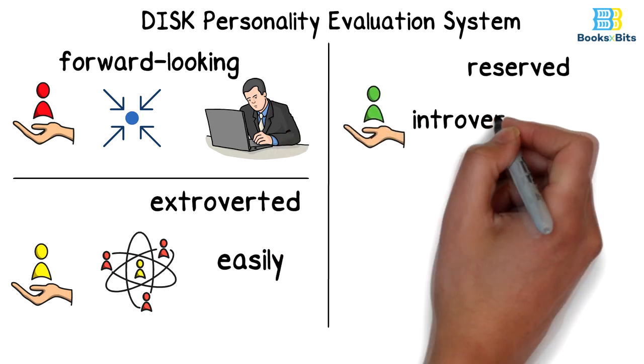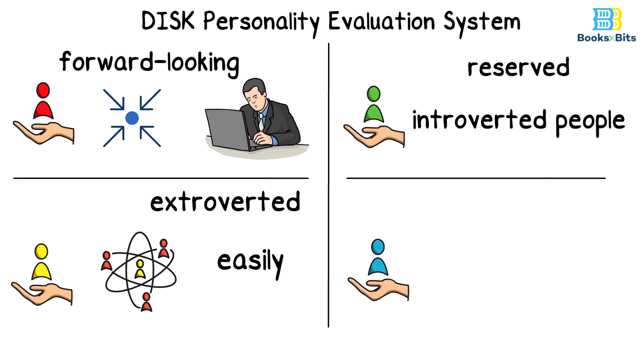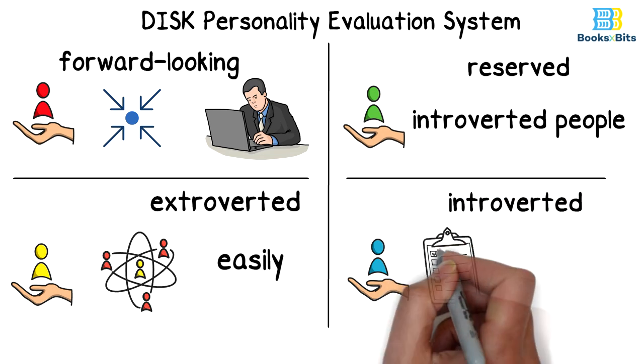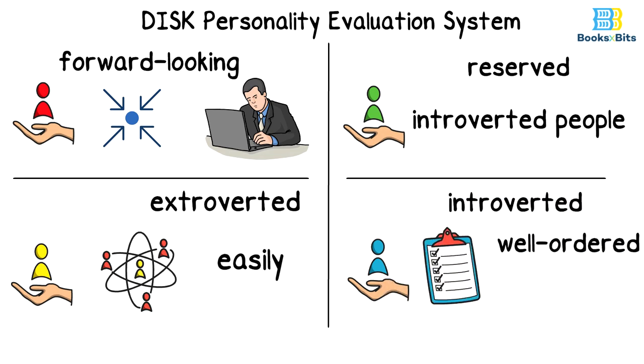Green refers to reserved and introverted people. Blue refers to introverted and task-oriented people who like things to be well-ordered and want to work methodically and with structure.